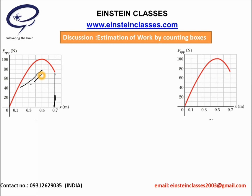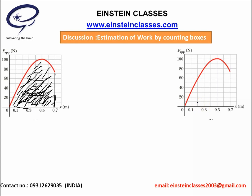To find the total work done, we calculate the total area. First, find the area of one box — consider any box on the graph. Each box is a rectangle. From the graph, one dimension is 0.1 meter: the x-axis shows 0.1 and 0.3, so across 0.2 meters there are two boxes, making one box 0.1 meter wide. For the y-axis, the scale shows 20 Newton, so one box has a height of 10 Newton.